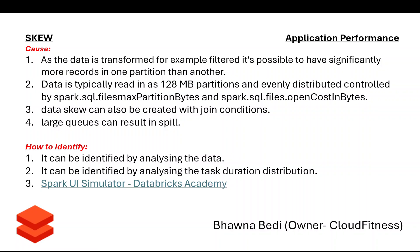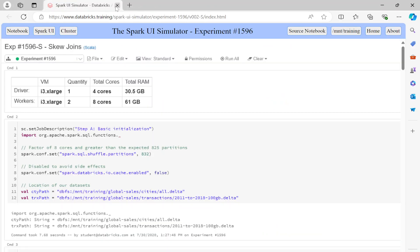To identify data skewness, you have to analyze your data at every step during development and check that your data is not skewed. At the same time, check the task duration — when your code at a particular step is taking a lot of time, go check what is the problem at that particular task. Now we will go to the Databricks Spark UI simulator to understand data skewness.